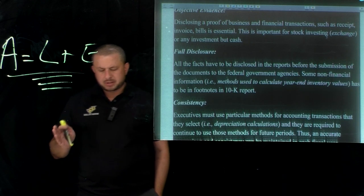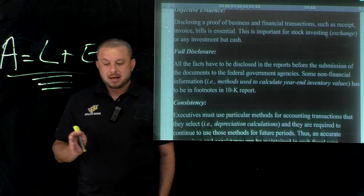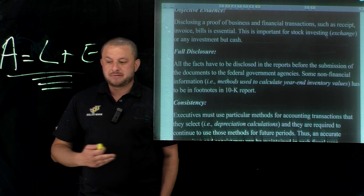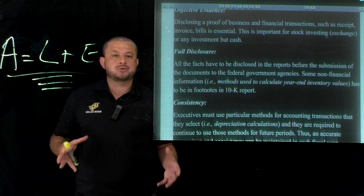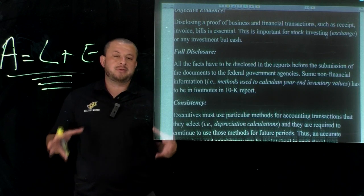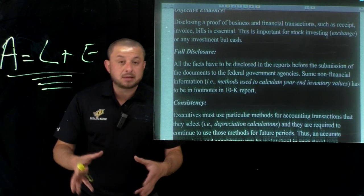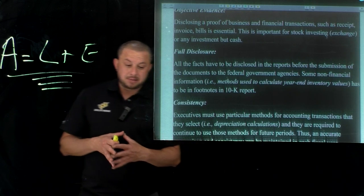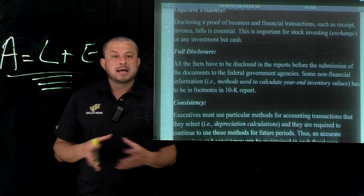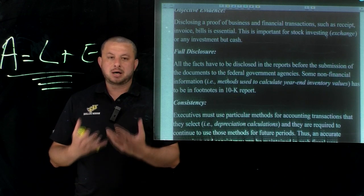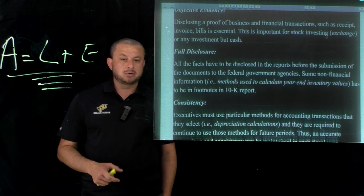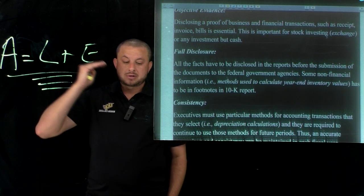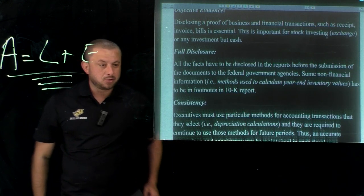There is something called the 10-K report. Every single disclosure, every piece of evidence, every activity report must be documented in the 10-K report. Most companies are publicly operated corporations and their 10-K reports are publicly available, including every single operational procedure, fully disclosed with evidence.